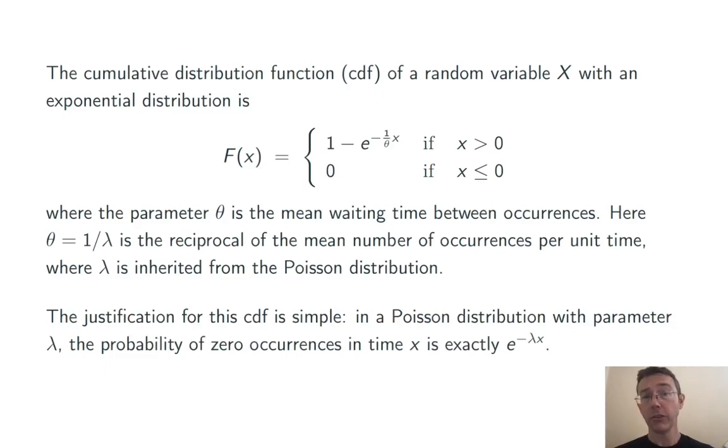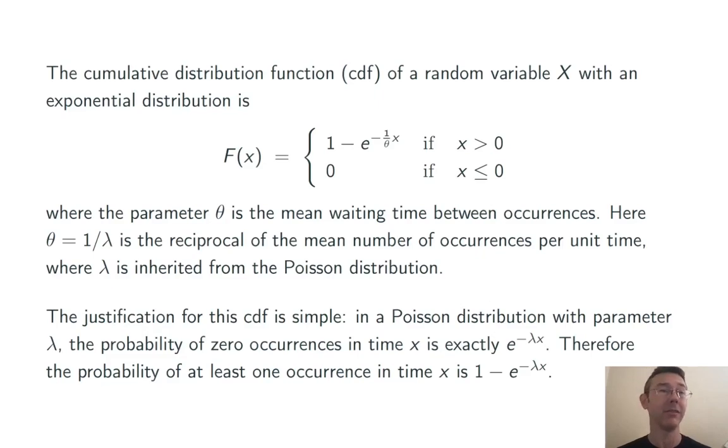The justification for this CDF is really simple. In a Poisson distribution with parameter lambda, the probability of zero occurrences in time x is exactly e to the negative lambda x. So the probability of at least one occurrence in that time is 1 minus e to the negative lambda x.